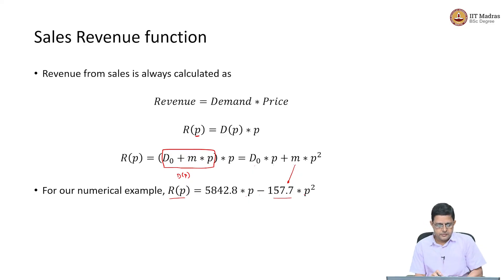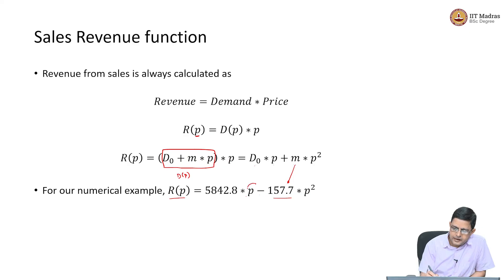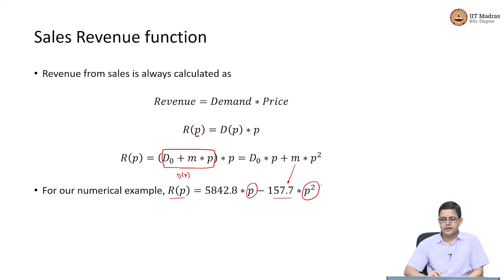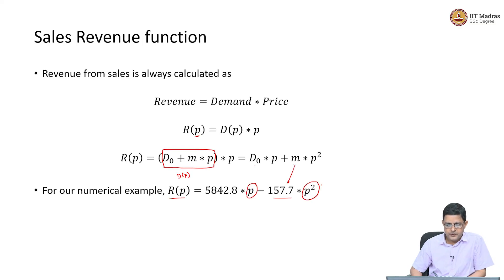Now the question is: if my objective is to maximize revenue, what should be the price I charge in the market? We have the revenue equation R(P) = 5842.8·P − 157.7·P². Let us maximize it and find the optimal value of P that maximizes the revenue function.